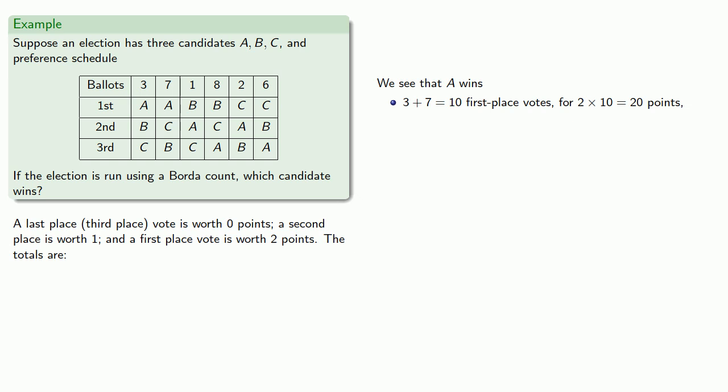A also picks up some second place votes here and here, and that's one plus two, three second place votes for three more points. And so, A wins a total of twenty-three points.